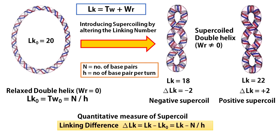A quantitative measure of DNA supercoiling is called the linking difference. If the linking difference is positive, the topological domain is called positively supercoiled, and the DNA is somewhat overwound compared to the relaxed DNA. If the linking difference is negative, the topological domain is called negatively supercoiled, and the DNA is somewhat underwound compared to the relaxed DNA. Remember that most DNAs in vivo are negatively supercoiled.